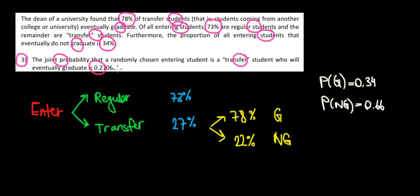Okay, so first let's put all this data on a graph and then we'll be able to interpret it. This is what we have: we enter the university and could have either regular students or transfer students. Since 73% are regular, the remainder are 27%, because in total they must add up to 100%.